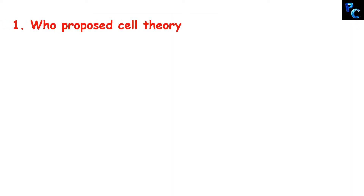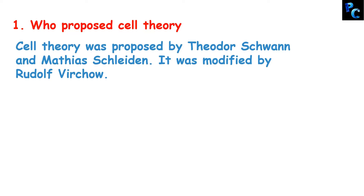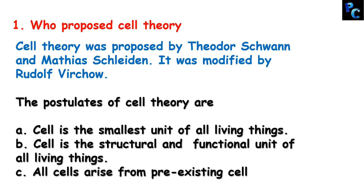The first question is: who proposed cell theory? Quickly write in your notebook and give 2 marks for each correct answer and 0 marks for each wrong answer. Cell theory was proposed by T. Schwan and M. Sladen. It was modified by Rudolf Virchow. Cell theory postulates: cell is the smallest unit of all living things; cell is the structural and functional unit of all living things; and all cells arise from pre-existing cells.